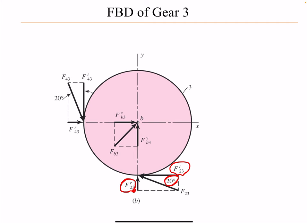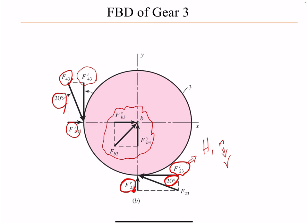To summarize: we found all the forces by first finding the tangential component from the power and RPM. Then, using the fact that it's an idler gear, we found the other tangential component. Once we had one component, we found the other using the pressure angle, and finally used the equilibrium equations — summation of forces in x and y equals zero — to find the reaction forces.